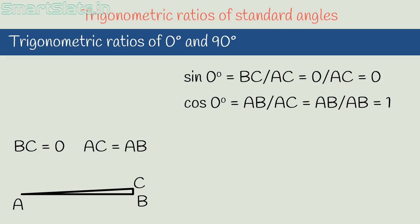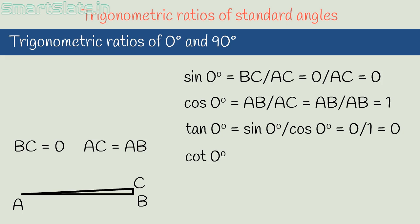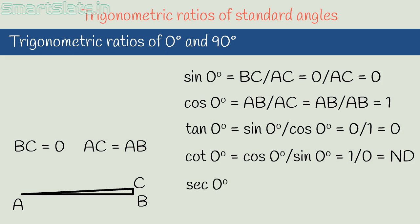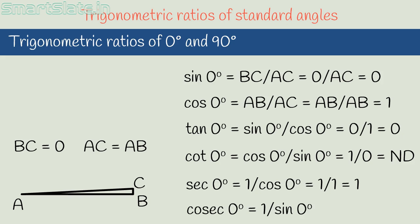Using sin 0° = 0 and cos 0° = 1, we can find the other ratios. Tan 0° = sin 0°/cos 0° = 0/1 = 0. Cot 0° = 1/tan 0° = 1/0, which is not defined. Sec 0° = 1/cos 0° = 1/1 = 1. Cosec 0° = 1/sin 0° = 1/0, which is not defined. Have a look at all the trigonometric ratios when angle theta equals 0°.